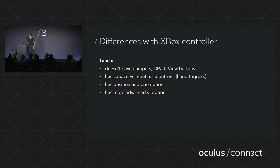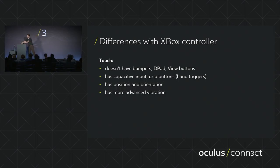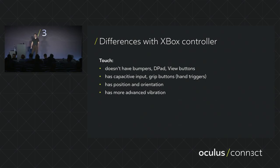Here are differences between touch and Xbox controllers. They look similar and share A, B, X, Y and thumbstick conventions with triggers. But touch controllers don't have bumpers, a D-pad, or the view button. While touch lacks those, it has capacitive input, the grip button (also known as the hand trigger), position and orientation tracking, and more advanced vibration haptics.